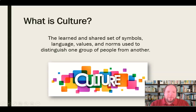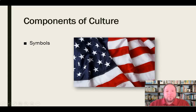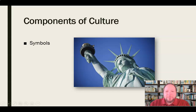So again, culture in a broader sense is the learned and shared set of symbols, language, values, and norms used to distinguish one group of people from another. Let's break this out and use some obvious examples — the components of culture as they exist here in the United States. Some symbols important to our culture as Americans include things like the flag, the national bird or bald eagle, the Statue of Liberty — things that convey this idea of what we are and who we are and what we represent.